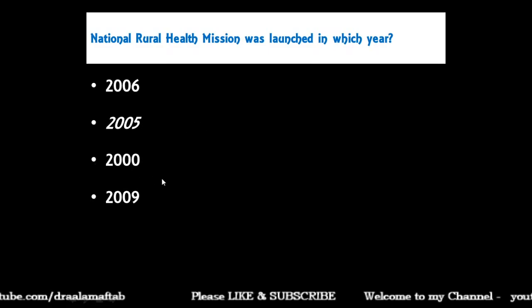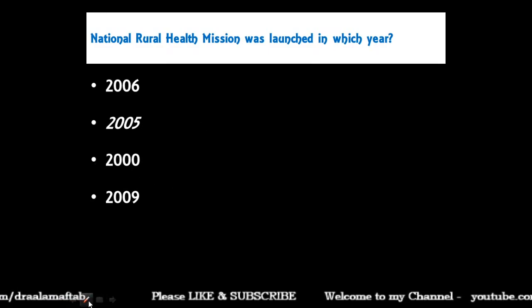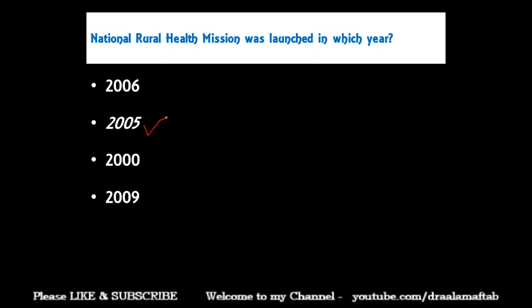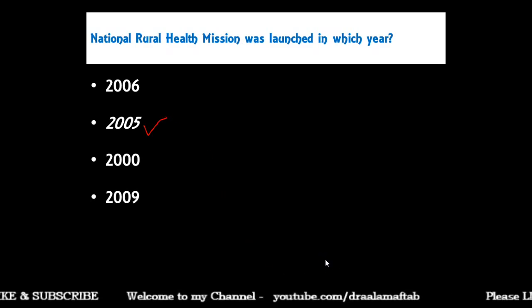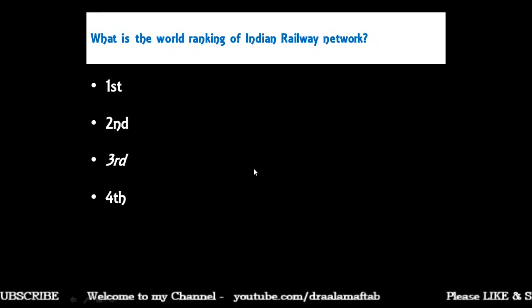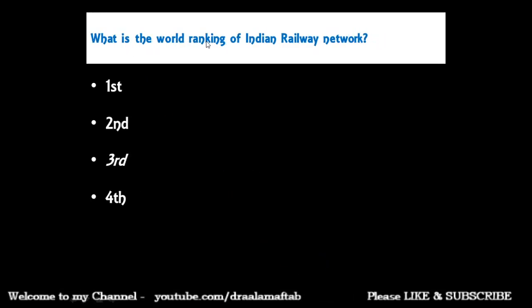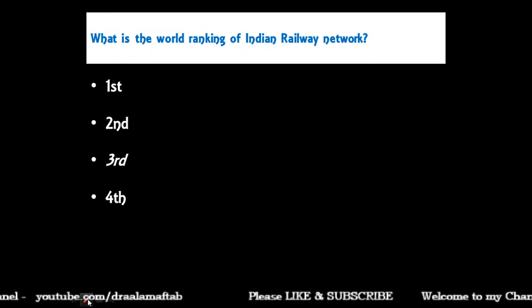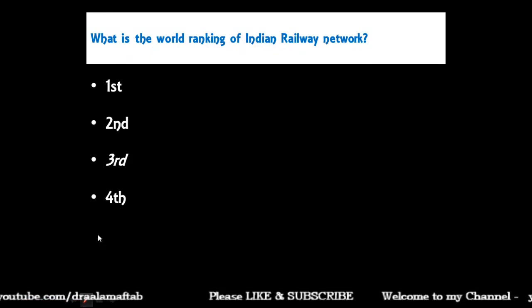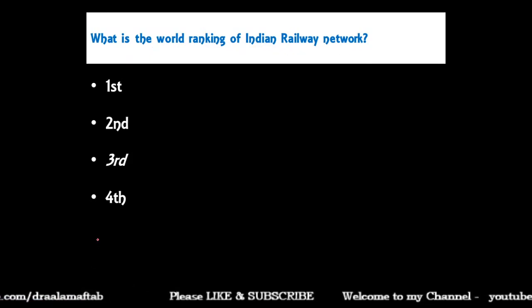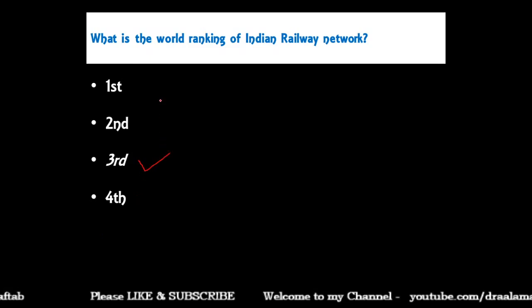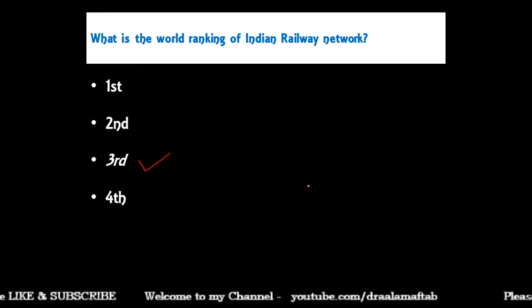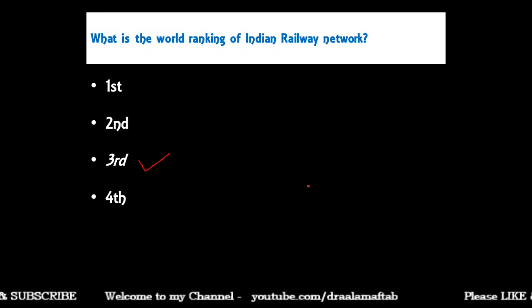The correct answer is 2005 — the National Rural Health Mission was launched in 2005. What is the world ranking of the Indian railway network? Indian railways is ranked third in the world — first is the USA and second is China.